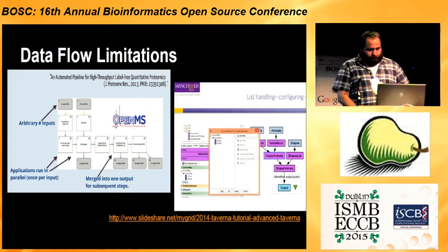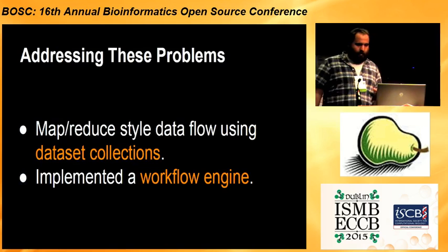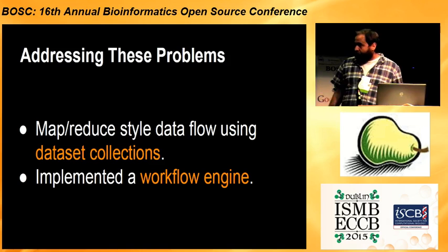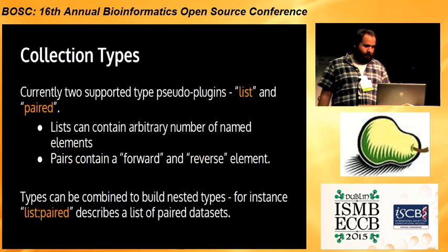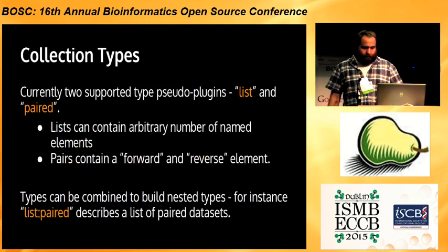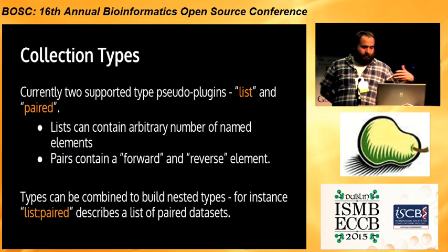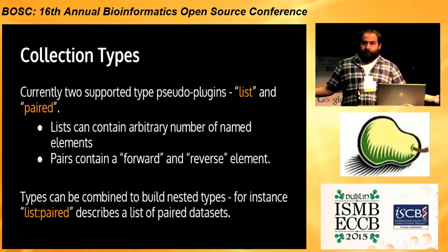I think that Galaxy over the last year and a half has really addressed these problems, and I'm going to talk about our solutions. We now have data flow that can handle these map-reduce style operations through dataset collections, and we've implemented a real workflow engine. Dataset collections are just this idea that we're going to take some datasets and put them together so we can operate on them as a collection. We have two kinds in Galaxy: we have lists and we have pairs, and they can be nested. A list of paired datasets is a pretty common operation for the tool set on usegalaxy.org.